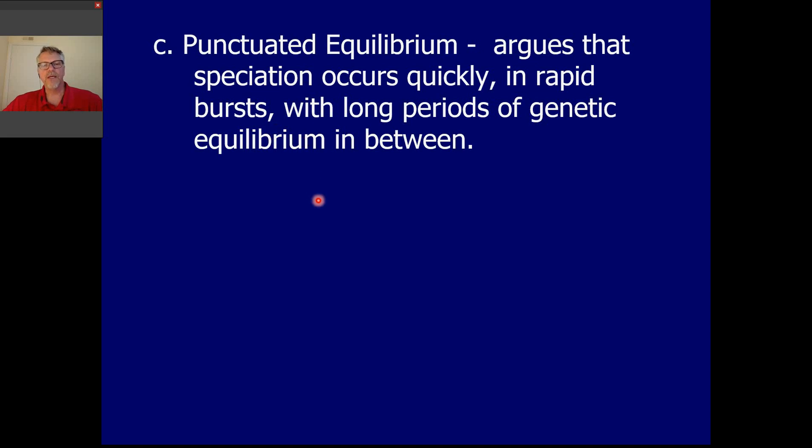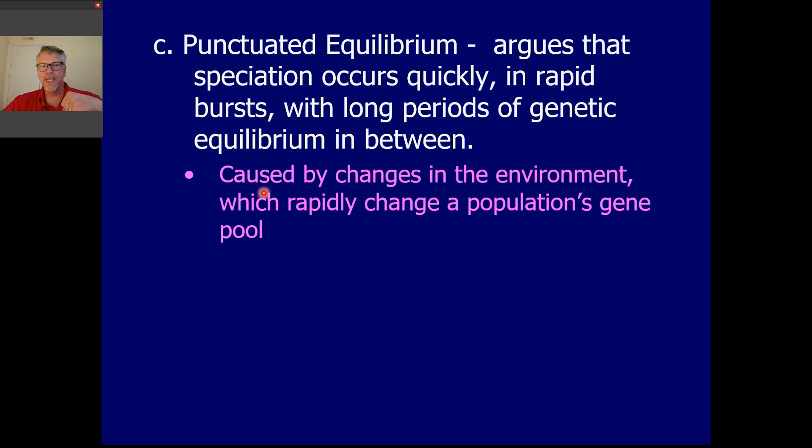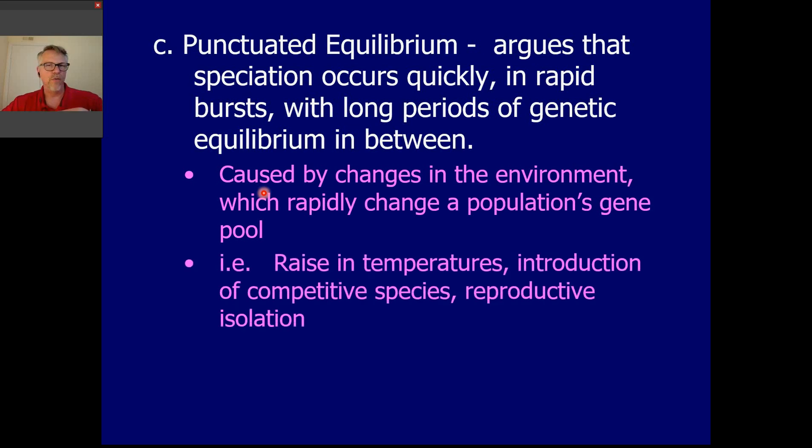So punctuated equilibrium says that there will be long periods for a species where there seems to be nothing happening. No allele frequencies are changing. And then some environmental change occurs that means the population has to evolve or change quickly. And so you'll see a burst of changes, a burst of changes in allele frequency, a burst of evolution, and then a stable period, and then another burst of evolution when environment changes again, and then another flat period, and then another stable period. The kinds of things that can trigger this are rises in temperatures or introducing a competitive species, or even reproductive isolation, these causes sort of come on quickly and change the environmental pressures on a species quickly. And so you see a big spike in kind of evolution rate.